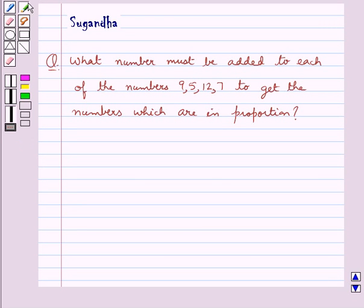Hello and welcome to the session. In this session we discuss the following question: What number must be added to each of the numbers 9, 5, 12, 7 to get the numbers which are in proportion?